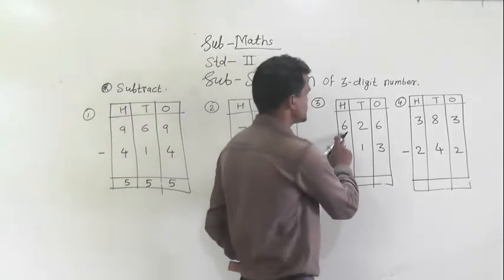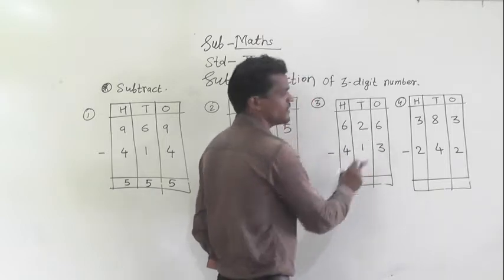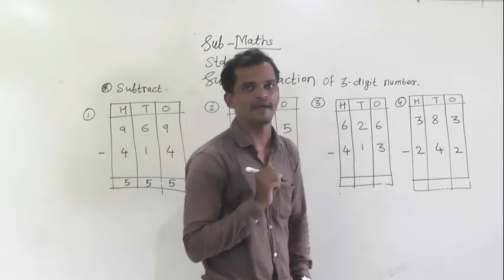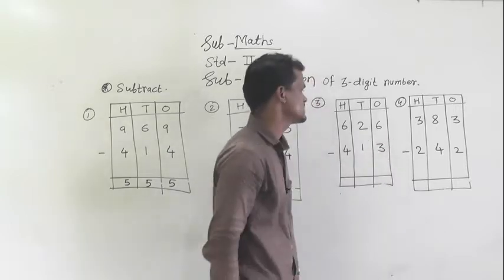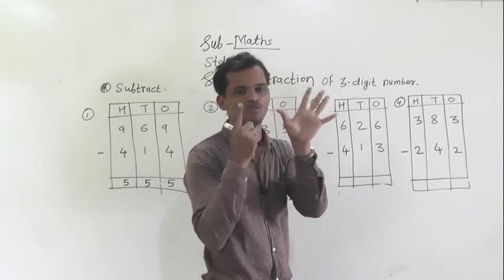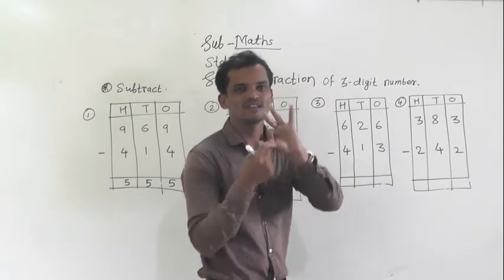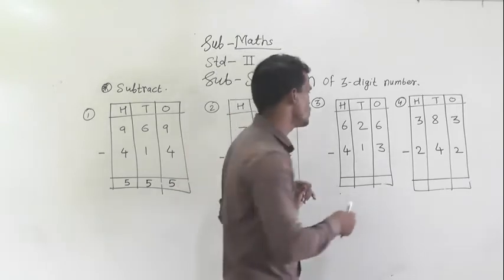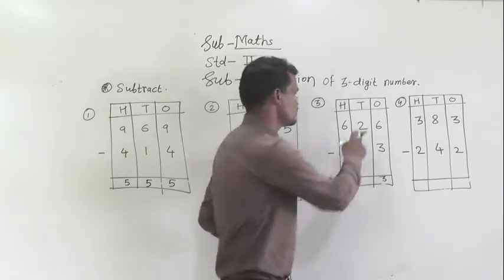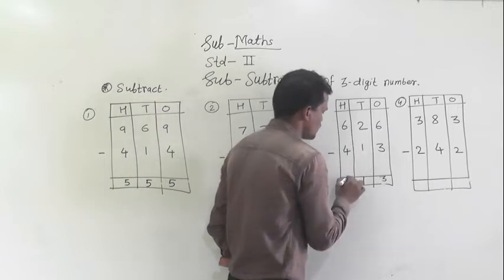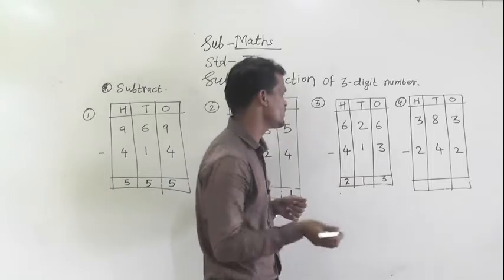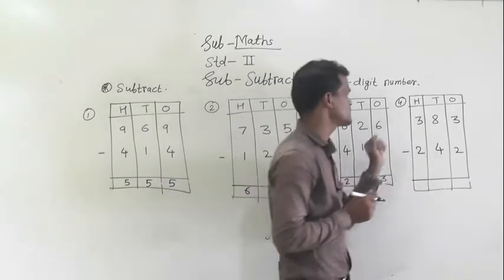Next example: 626 minus 413. Subtract the values, start from the 1's place or right-hand side. 6 minus 3 — these are my 6 fingers; if I remove 3 fingers, 1, 2 and 3, then 3 fingers will be left. So 6 minus 3 is 3, or you can use backward counting. Then 2 minus 1 is 1, and 6 minus 4 is 2. So read this number: 213 is the difference between these 2 numbers.